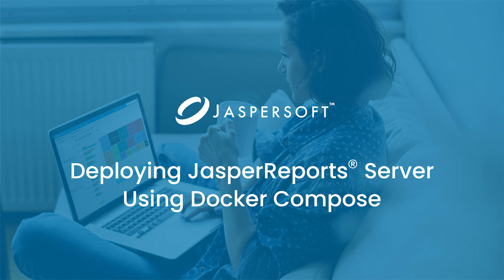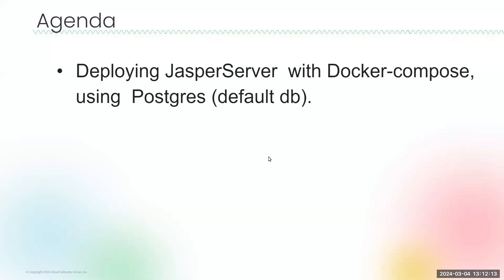Hello everyone. In this video we will explain how to deploy Jasper Report Server on Docker. Our agenda is deploying Jasper Report Server with Postgres deployed on a Docker container using Docker Compose. To do this we need two images: jasper-server-webapp and jasper-server-build-o-matic. For more information about creating these images, please check out the video on creating Docker images for Jasper Report Server, where we have explained each and every step in detail. Let's jump into the demo.